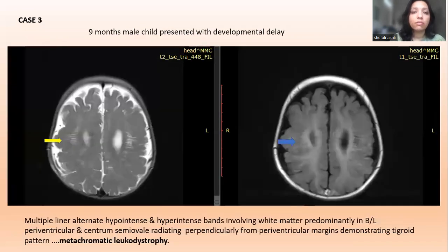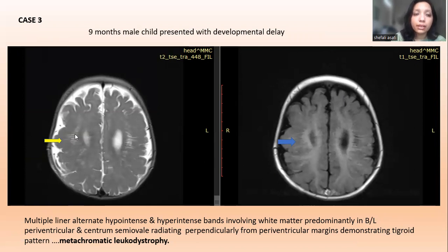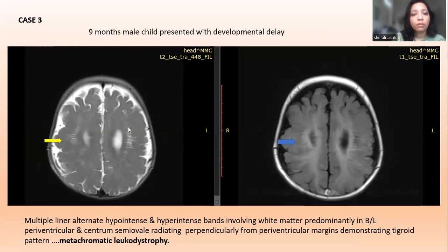Case 3: A nine-month-old male child presented with developmental delay. On T2-weighted and T1-weighted axial scans, there are multiple linear alternating hypo- and hyperintense bands involving the white matter, predominantly in the bilateral periventricular regions and centrum semiovale, radiating perpendicularly from periventricular margins, demonstrating a tigroid pattern. The differential diagnosis is metachromatic leukodystrophy.